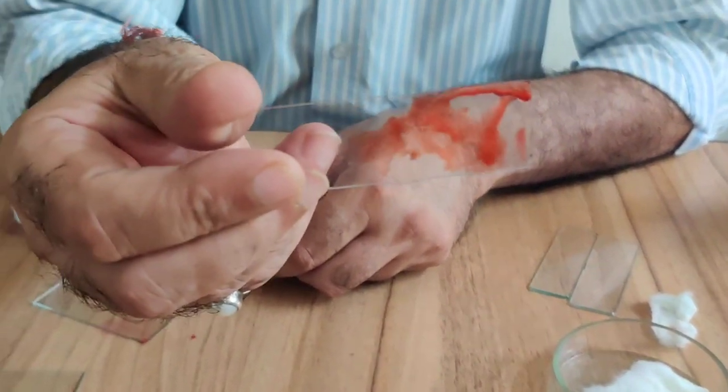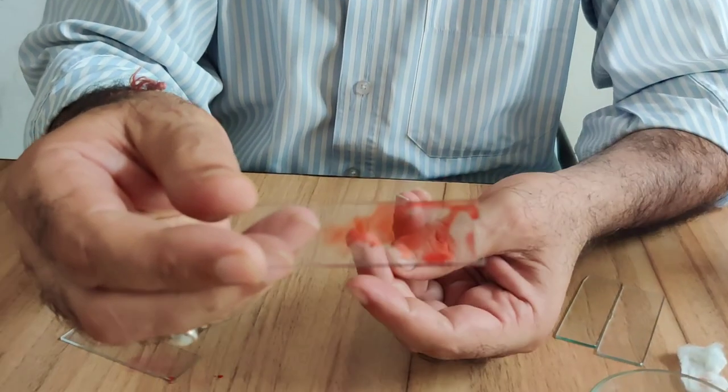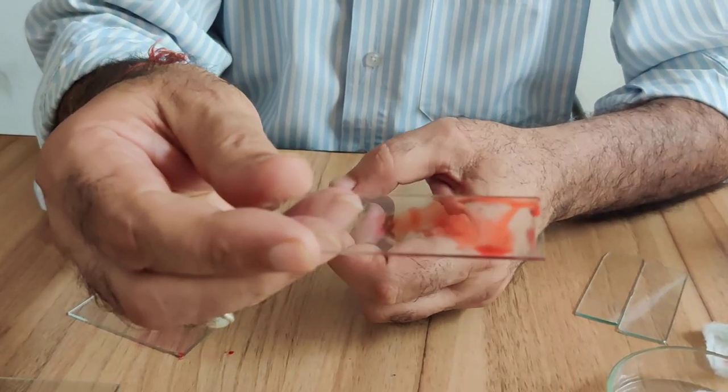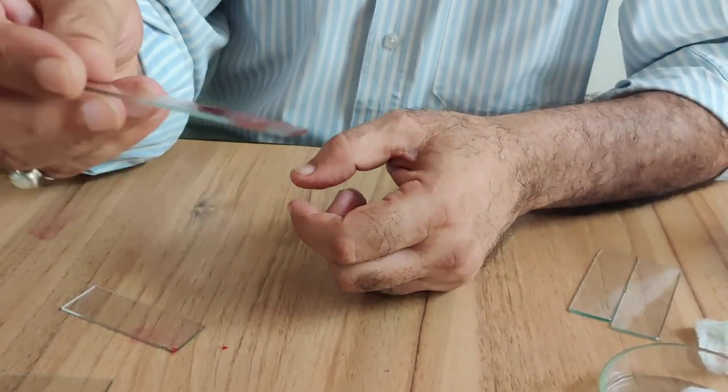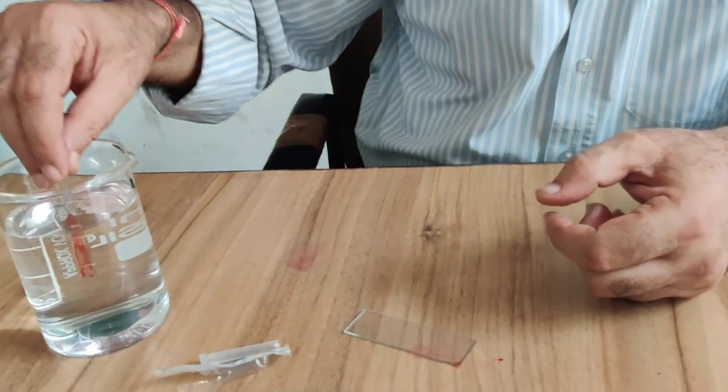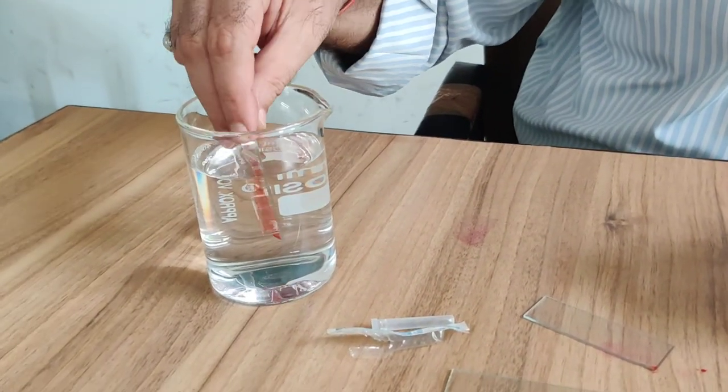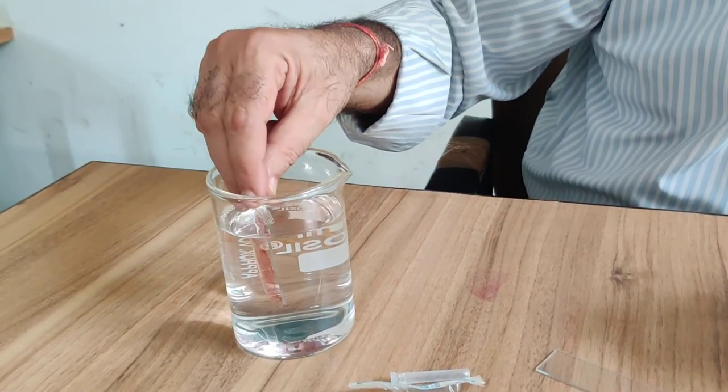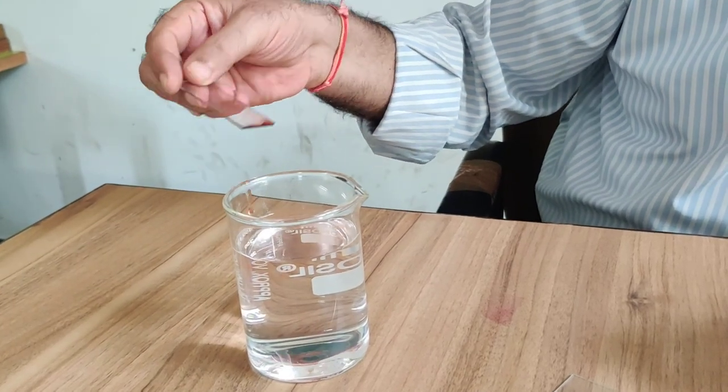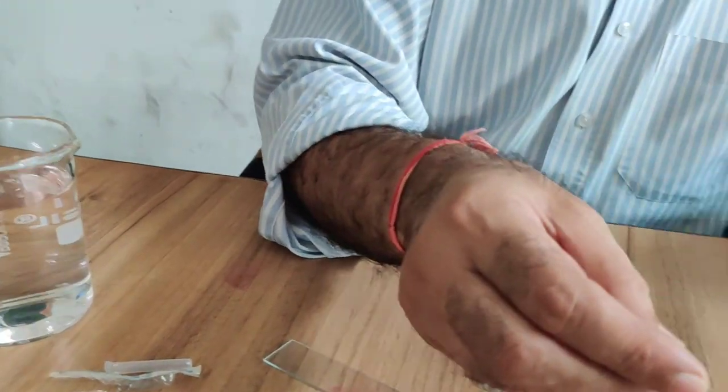Now you can dry it for some time, for two, three minutes you can dry it. After that, you keep it in water to remove extra stain, so extra stain will be removed and blood film will remain there.